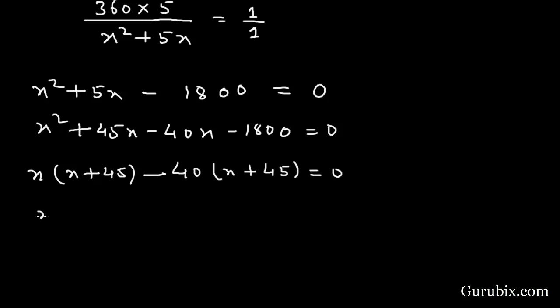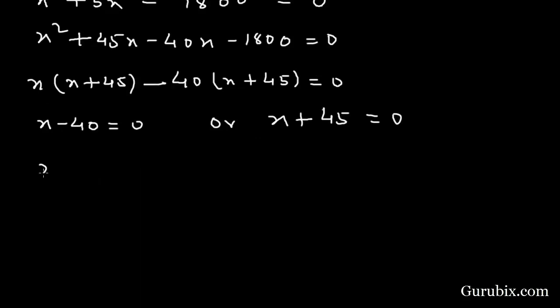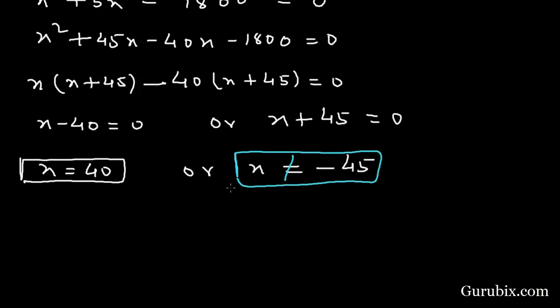Here we have x minus 40 equals 0 or x plus 45 equals 0. So x equals 40 or x equals minus 45. But the speed cannot be negative, so x is not equal to minus 45.